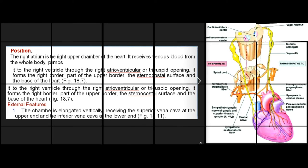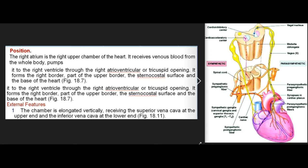The right atrium is the right upper chamber of the heart. It receives venous blood from the whole body and pumps it to the right ventricle through the right atrioventricular or tricuspid opening. It forms the right border, part of the upper border, the sternocostal surface, and the base of the heart.